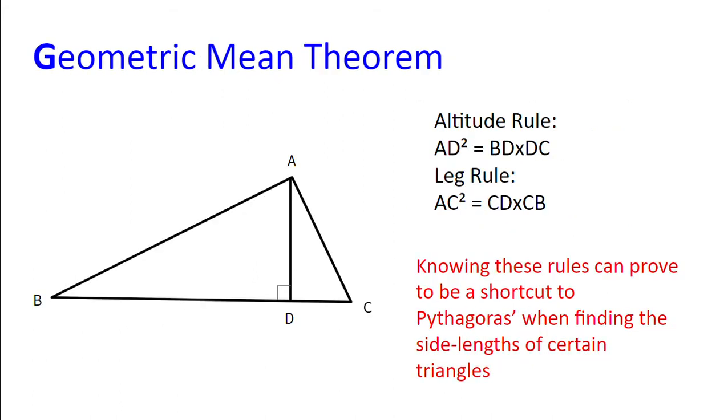Next up we have the Geometric Mean Theorem. There's two parts to this. The altitude rule, which is AD squared equals BD multiplied by DC. And the leg rule, which is AC squared equals CD multiplied by CB or AB squared equals BD multiplied by BC.